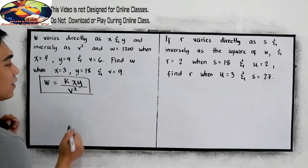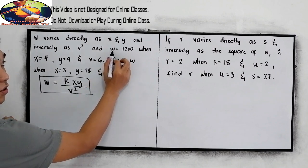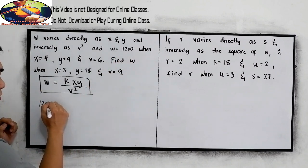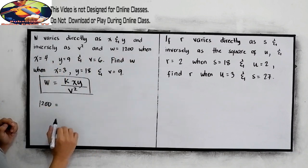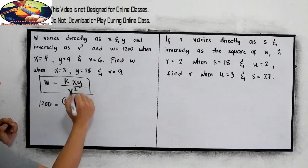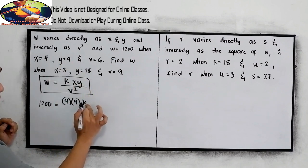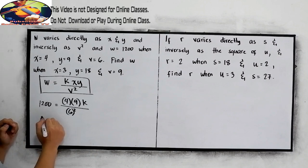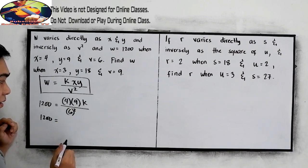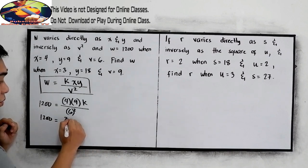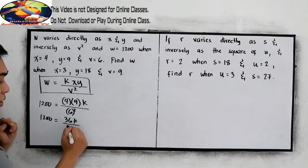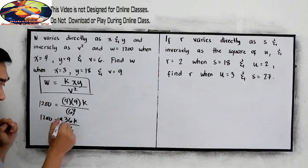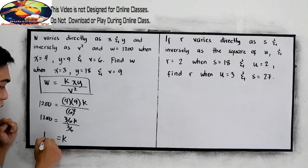We're going to find first the constant of variation. So w is 1,200, substitute: x is equal to 4, y is equal to 9, copy k, over v squared, so 6 squared. Now we have 1,200 is equal to 4 times 9, that is 36k, over 6 squared which is 36. So 36 divided by 36 is 1. So k is equal to 1,200.